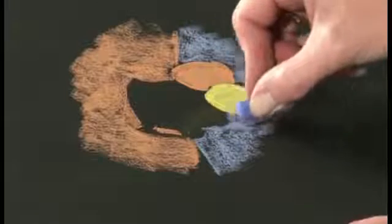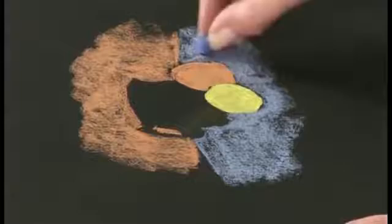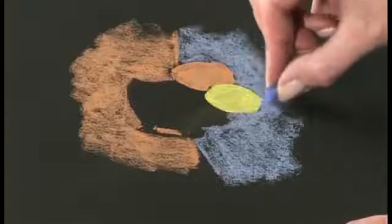So if I just block in, there's the bottom of the jug, there's the cloth, and I automatically get the texture created by just blocking in with the pastel stick.